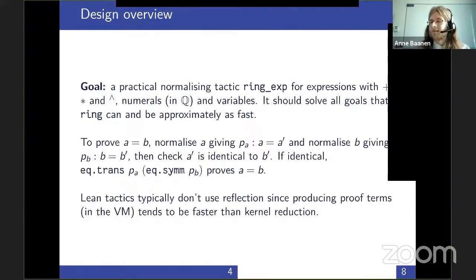Just one note about the design: the ring tactic that was originally in Coq was a reflective tactic, but in Lean we don't tend to write reflective tactics since Lean's kernel is not as much optimized for speed as Coq's kernel is. Instead, we use the elaborator, which runs in a VM optimized for speed, so we lose some advantages of reflective tactics which we have to counter with good engineering.